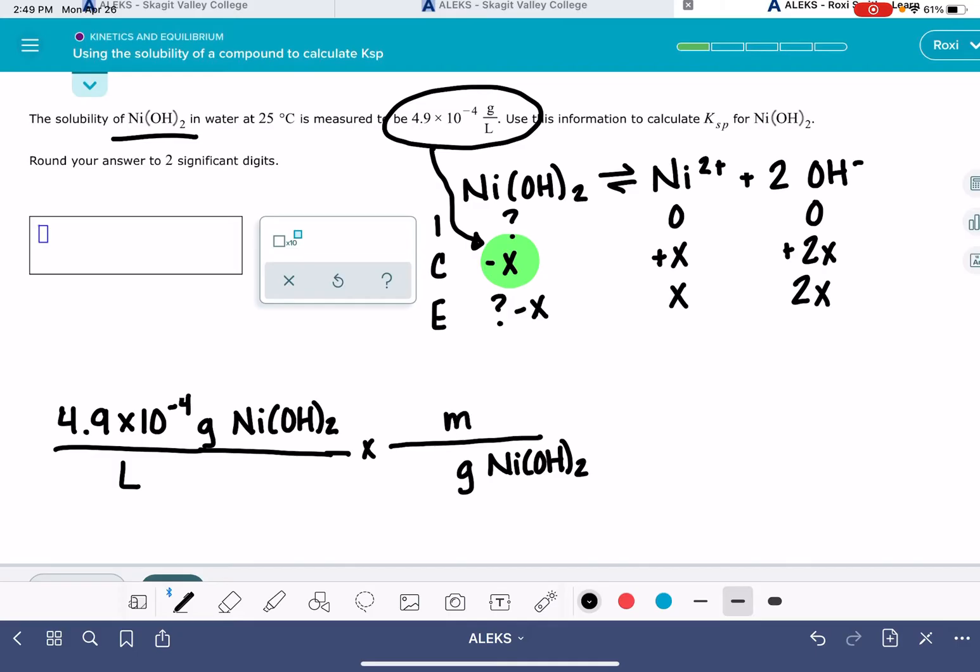And again, the reason for doing this is just to get this into the same unit as what we have in an ICE table. And the molecular weight of this guy is 93 grams per mole.